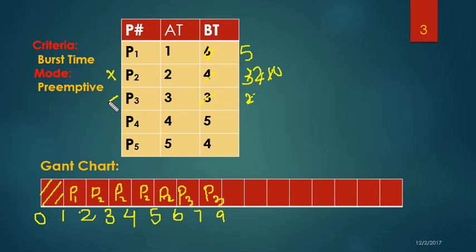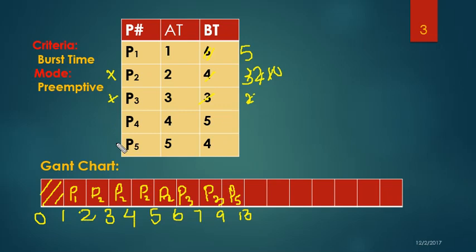P2 and P3 are done. Now we have P1, P4, and P5. P1 and P4 both have burst time 5, but P5 has burst time 4, which is the smallest. So I'm going to put P5 here. 9 plus 4 is 13, so I'm putting 13 here. P5 is also done at time 13.